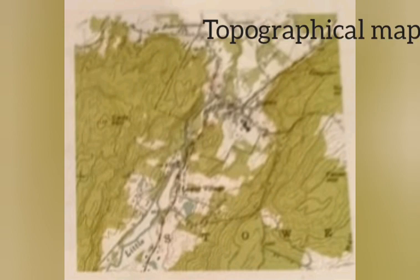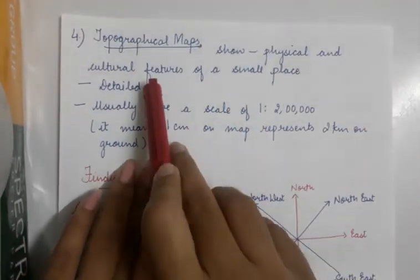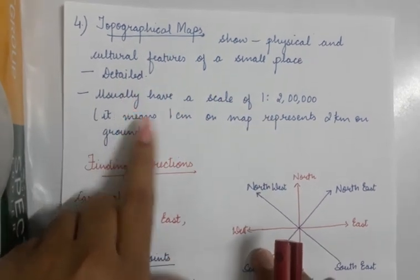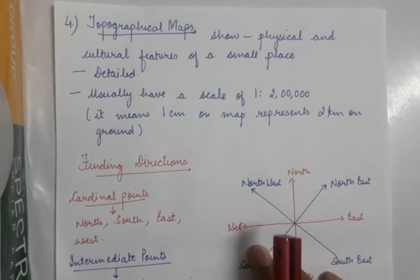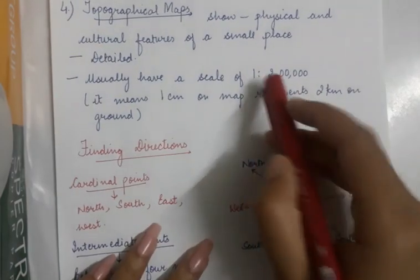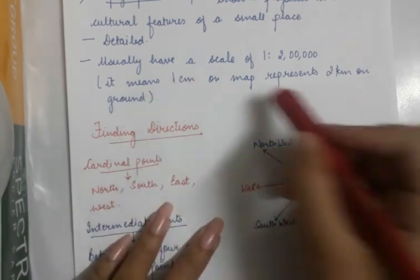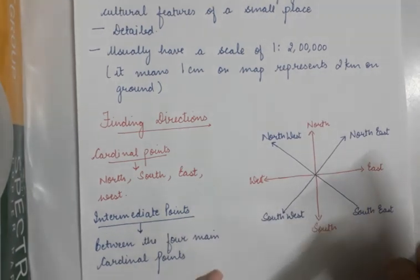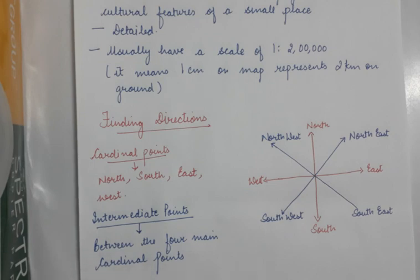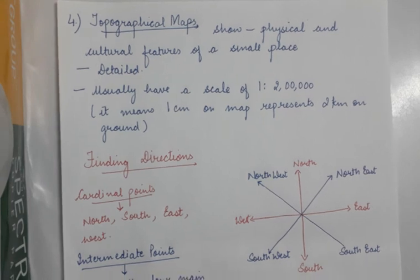Next are topographic maps. Topographic maps show both physical and cultural features and are very detailed maps. In topographic maps you can even measure accurate distances. The scale is given — for example, one is to two lakh, which means one centimeter equals two kilometers on the ground. So if I draw a line of one centimeter, it means it equals two kilometers on the surface of the Earth. You can find the accurate distance between places, between buildings, and between different things.